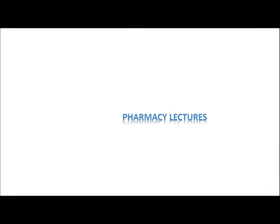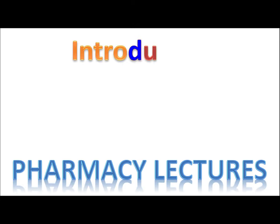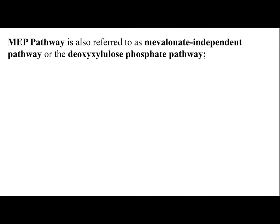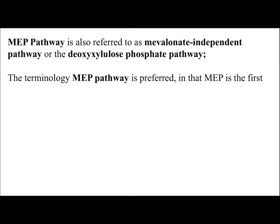Welcome to pharmacy lectures. Today we are going to discuss the introduction to the MEP pathway, also referred to as the mevalonate independent pathway, sometimes known as the deoxyxylulose phosphate pathway. This pathway is used for the synthesis of terpenoids like monoterpenes, diterpenes, and tetraterpenes by plants and microorganisms.